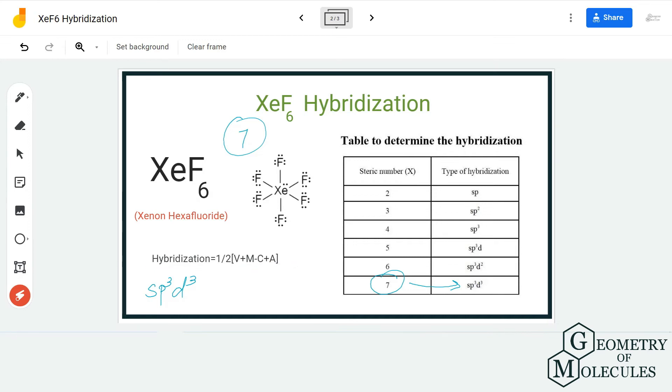For hybridization, V means the number of valence electrons that this molecule has, M is the monovalent, C stands for positive charge, and A stands for negative charge. This is a bit more complex than just finding out the steric number.